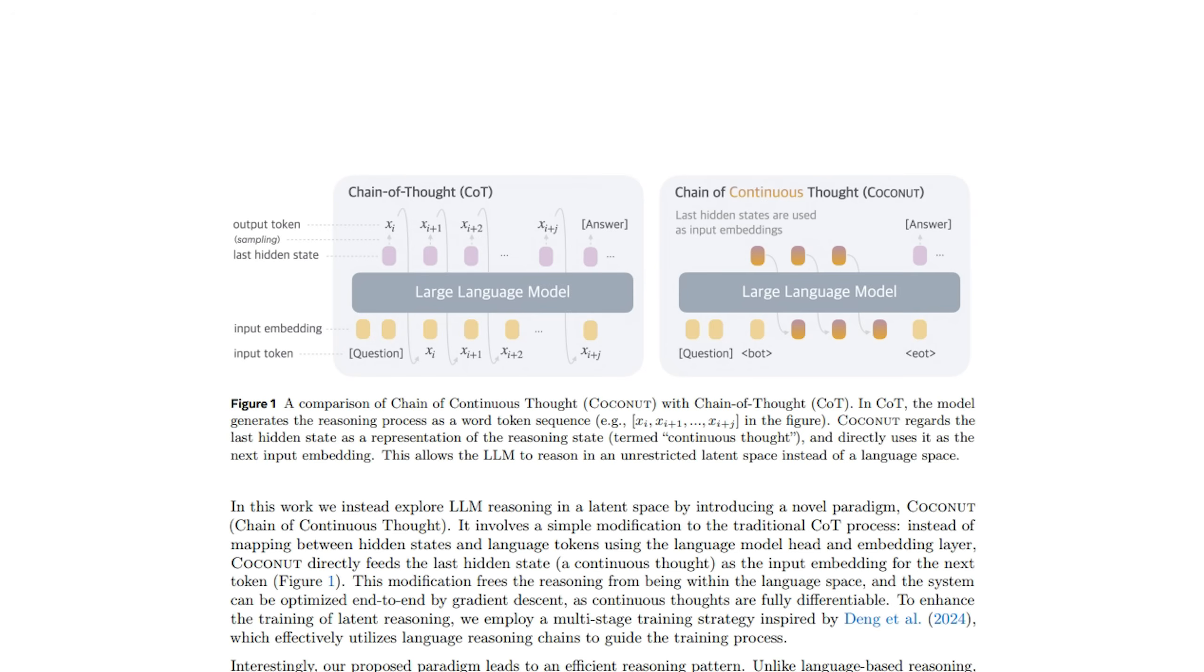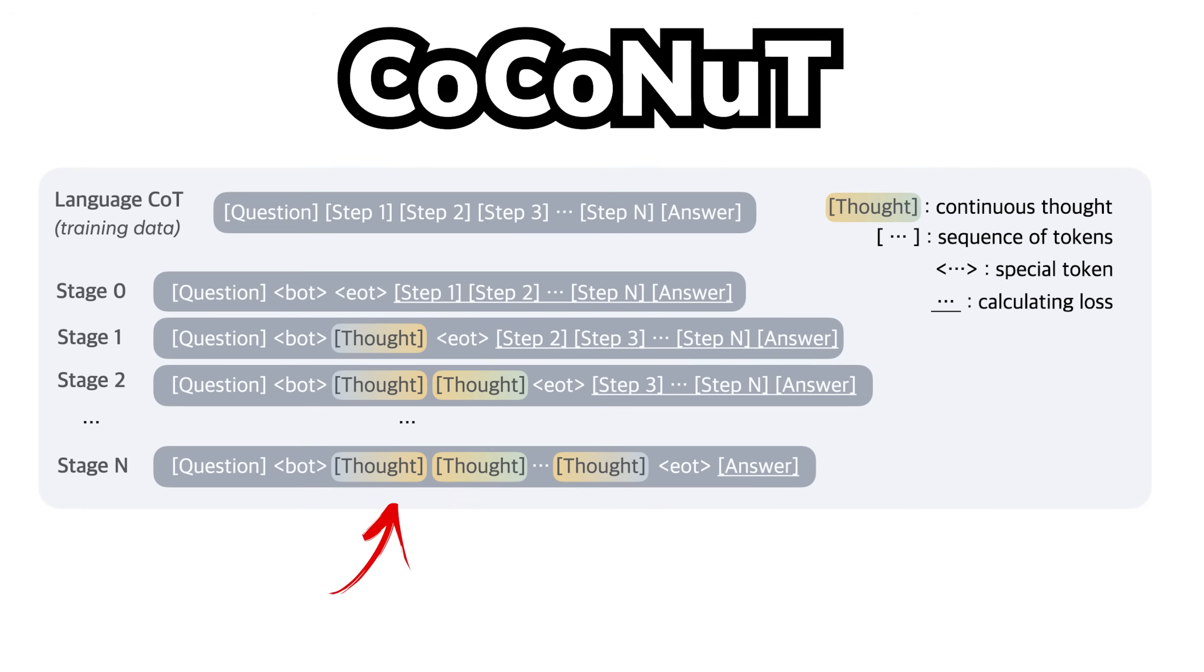We also looked at another paper called Coconut where we saw a way to make LLMs think using tokens that are not words to improve the reasoning process.